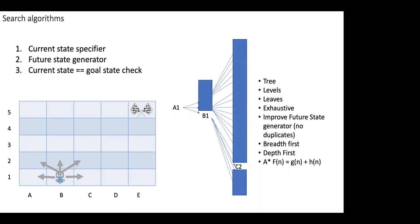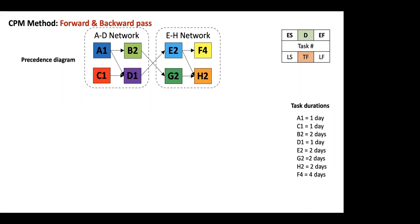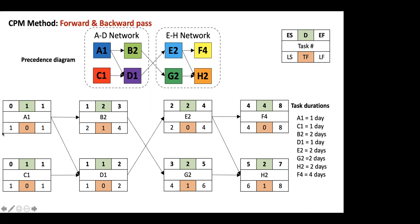To summarize: this is the simplest, stupidest example we could find that shows the theoretical problem. You have two networks, A-D-E-H, four tasks each: A, B, C, D, E, F, G, H taking one, two, one, one, two, four, two, two days. This is your network diagram. We solve this using CPM — early start, early finish, late start, late finish, float, duration, total float, forward pass, backward pass. The solution gives an earliest completion time of eight days — the duration of the project is eight days.